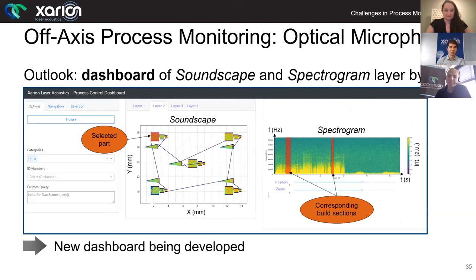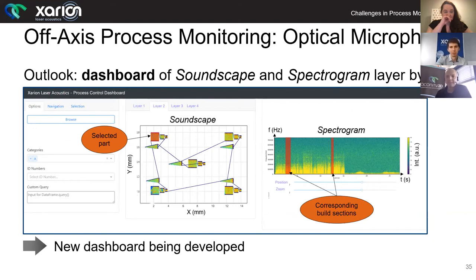I want to leave you with an outlook of what's coming up very soon. We have a dashboard in development which will show you not only the spectrogram and the raw data, but also the spatial distribution of the acoustic signal in the scanning area. That enables you to select a certain area or part, and then showcase the corresponding spectrogram. And of course, if something is going wrong — for example, if a crack has occurred at a certain time — this will be highlighted through this dashboard.